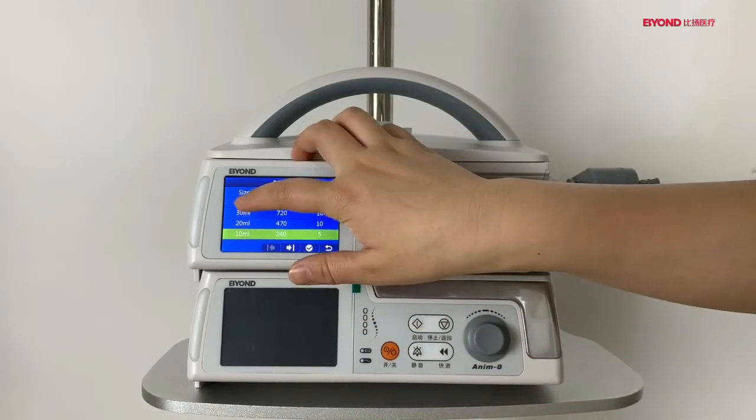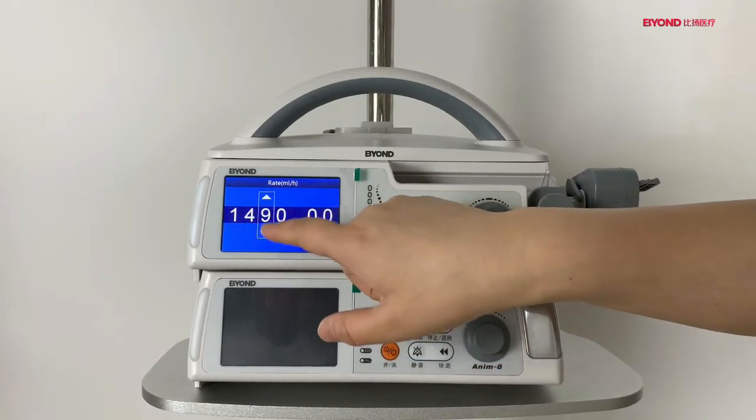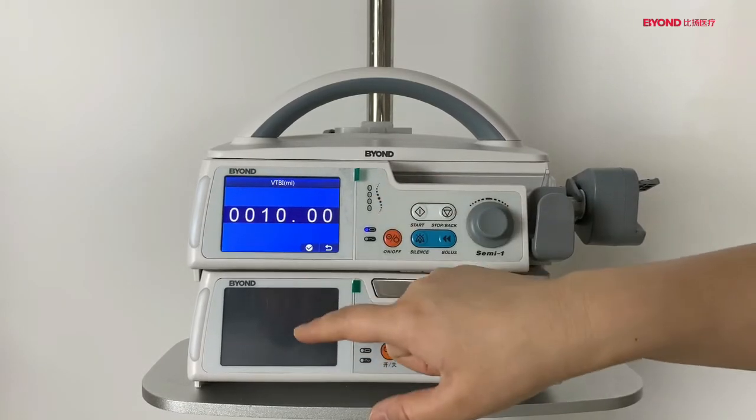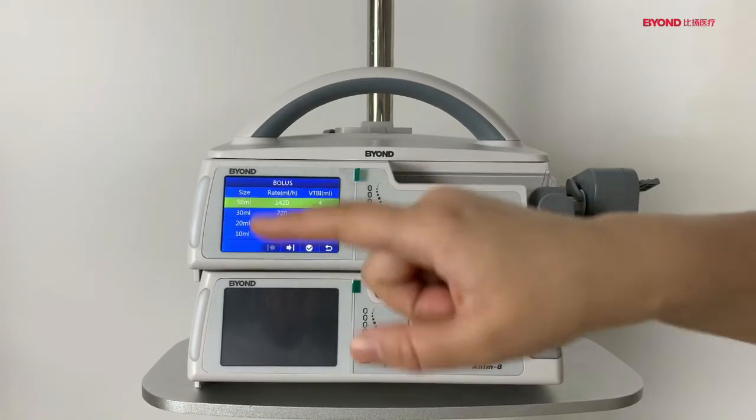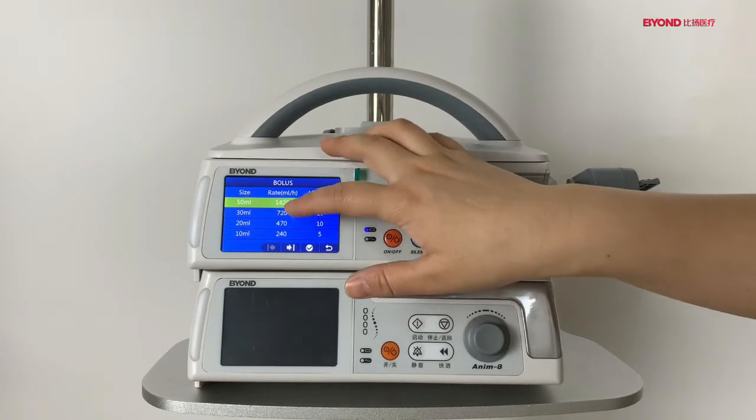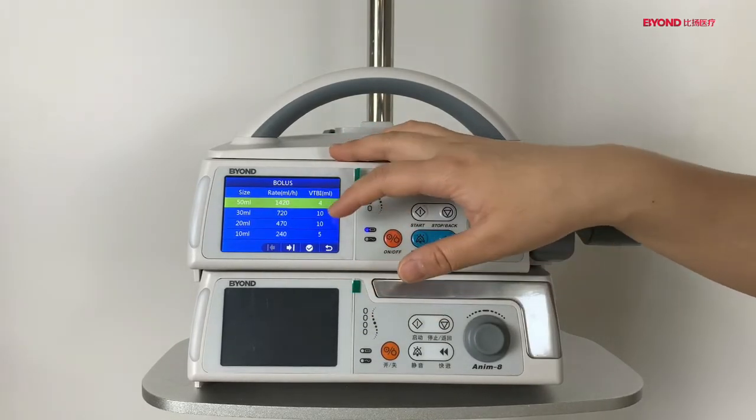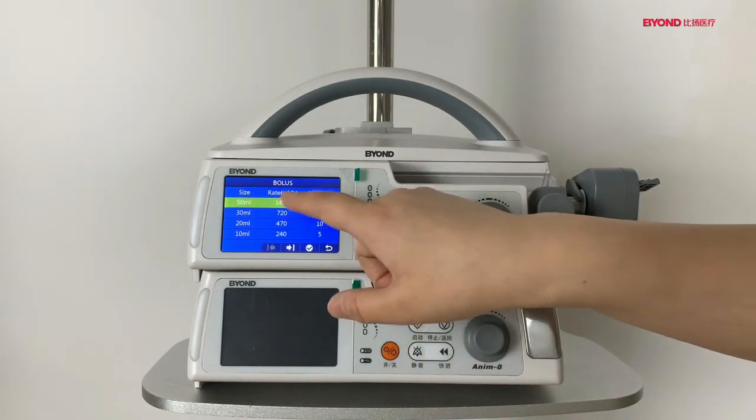For example, 50mm syringe. You can change the rate and the volume, bonus volume. So the pump will work automatically with these parameters. Thank you.